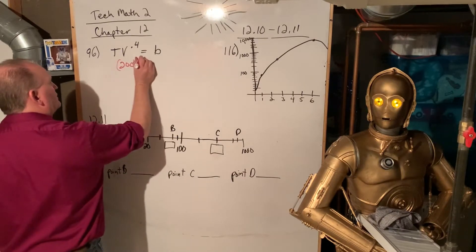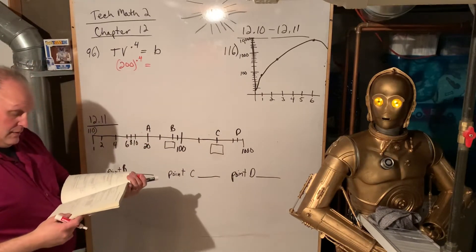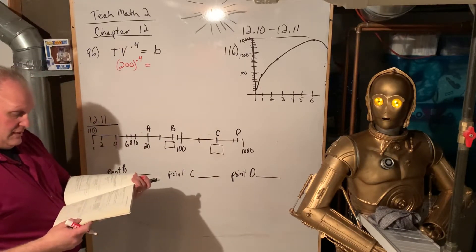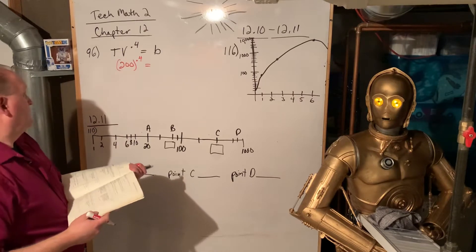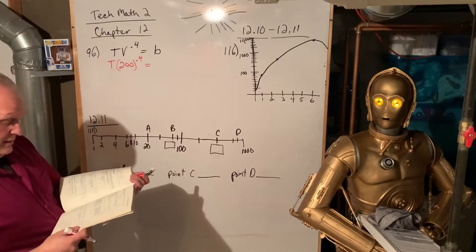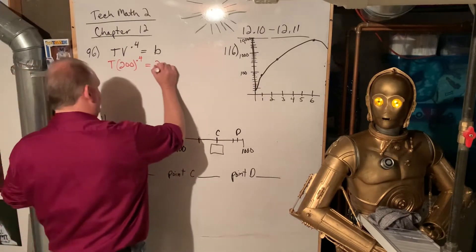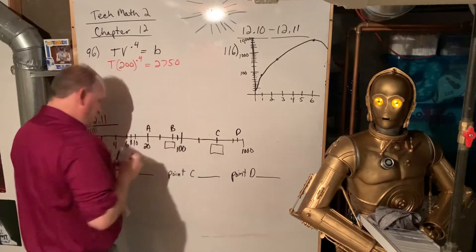And what else did they give me? And b is 2750. Okay.